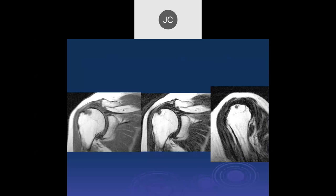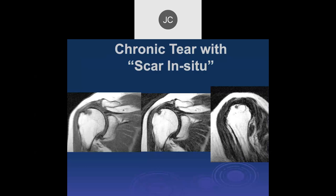On T1 there's thickening of the tendon fibers, and on T2 the fibers look intact but the myotendinous junction is retracted far medially, with what appears to be endondinous tissue. This is likely scar in situ — a full-thickness tear filled with scar and fibrous tissue, with no free communication. The tendon is back there but this is not functional tissue. This is a very chronic situation making repair extremely difficult; you probably can't get the tendon all the way back to the footplate.